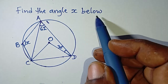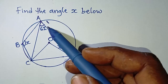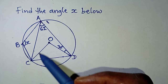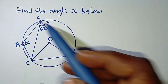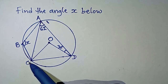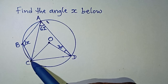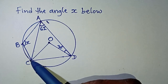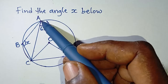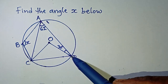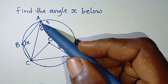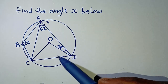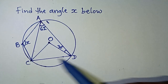Find the angle x. Looking at this triangle and this circle, let's check triangle ADC. From points C and D, we can see a line moving from C to A and another line moving from D to A, and it forms an angle of 62° at the circumference of the circle.